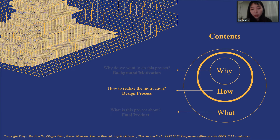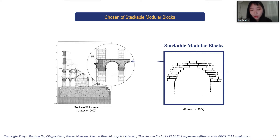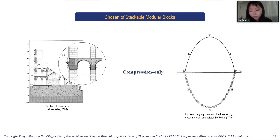The next part introduces how we tried to realize the motivation — the design process. Before introducing the design process, I'd like to talk about the two assumptions in this project. The first is that we choose stackable modular blocks to ensure a smooth surface for the construction of multi-layer buildings. The second is that the primary consideration of loads in this project are vertical loads, so compression only is the priority.